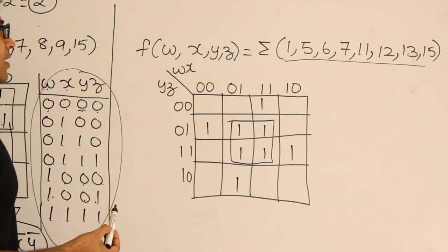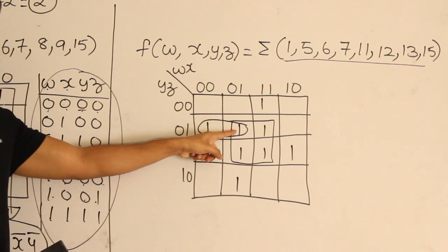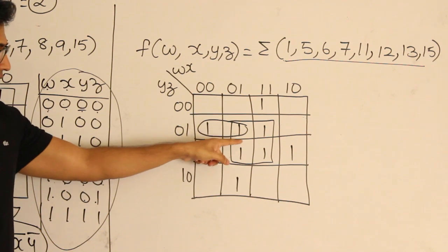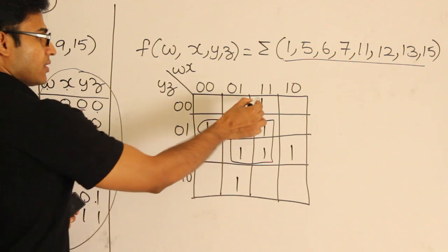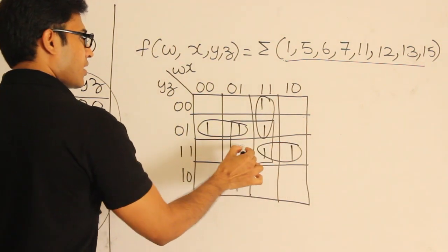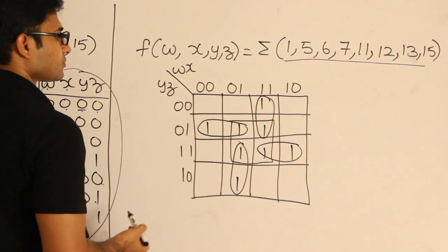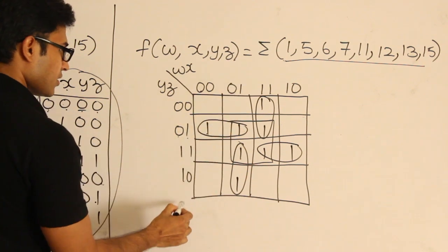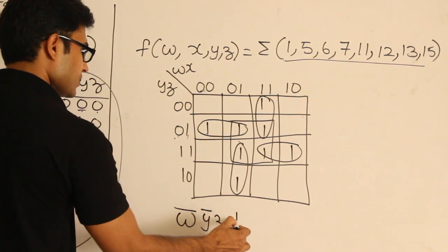Now, how to cover the 1s: this is the biggest subcube. A cell or a 1 can be covered by as many subcubes as desired. So this one is already covered by one subcube, but I can cover it again — no problem. Now covering this one, this one, and this one. We get a total of five subcubes. Let's write the expression for all five.